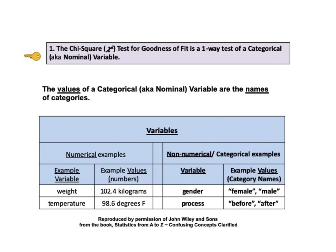Now let's focus on the right half of this table for non-numerical categorical examples. The values of a categorical variable are not numbers — the values of a categorical variable are names of categories. Nominal is the adjective associated with the word name, so categorical variables are also called nominal variables. For example, gender is a categorical variable, and it has two values which are the names female and male.